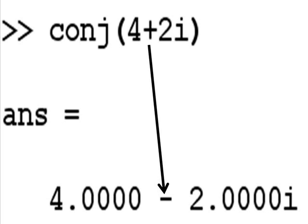The conjugate of 4 plus 2i is 4 minus 2i.